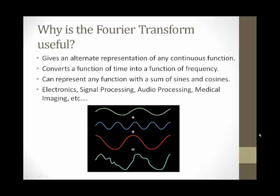Why is the Fourier transform useful? The reason is because it gives us an alternative representation of any continuous function. It can convert a function of time into a function of frequency, and it can also represent any function with a sum of sines and cosines. This can be used in many different real-world applications, such as electronics, signal processing, audio processing, medical imaging, and many more. As you can see at the bottom, there's a visual representation of the addition of simple sine and cosine waves to represent one single wave.